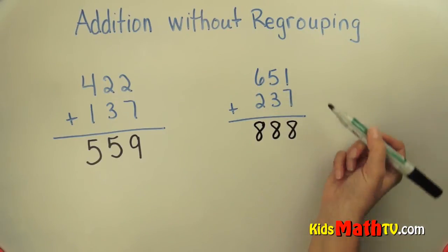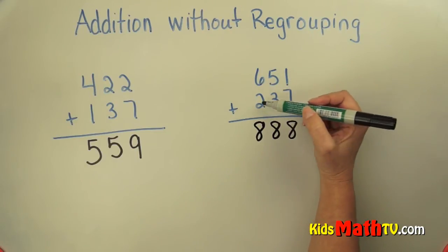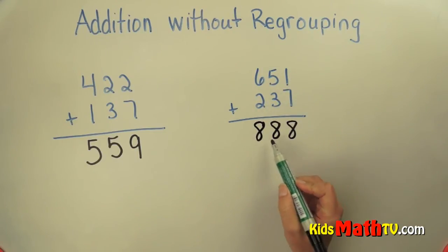...is eight hundreds. So 651 added to 237 is 888. And that's the end of our lesson on addition without regrouping.